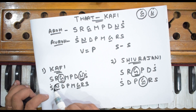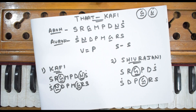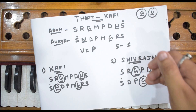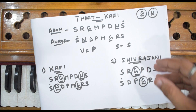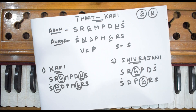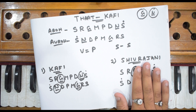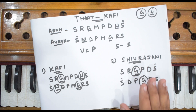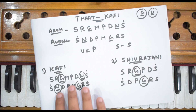There are many raags in this Thaat that use Komal Ga and Komal Ni. Raag Shivranjani is a special raag and you will find many popular songs in it, such as 'Mera Dil Ye Pukaare Aaja' and 'Jeena Yahaan Marna Yahaan'.